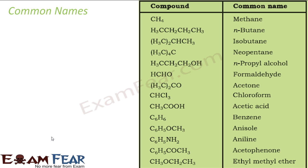Let's go through some of the common names. CH4 is called methane — the IUPAC name and the common name are the same here. This is n-butane, the straight butane. This is isobutane because we have two CH3 groups here. This is neopentane because we have three — in fact four — CH3 groups. This is n-propyl alcohol, a straight alcohol.